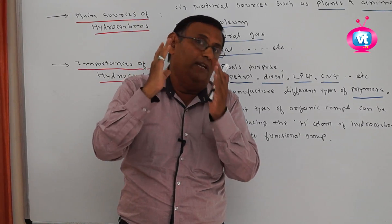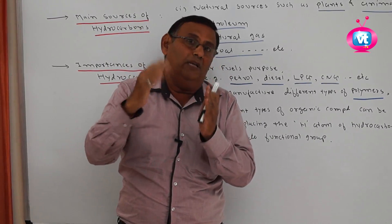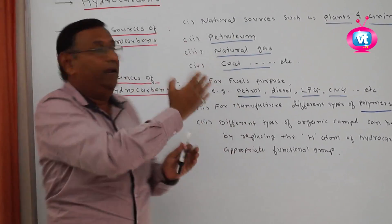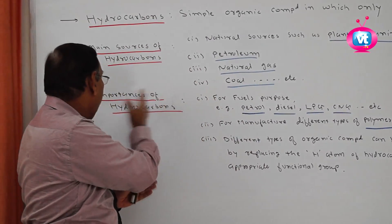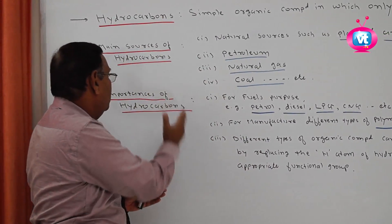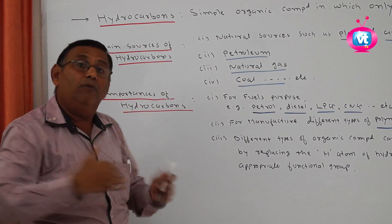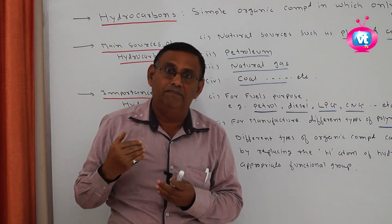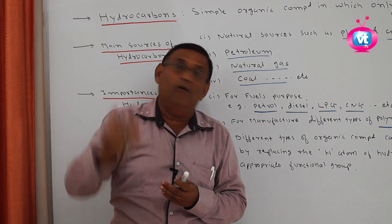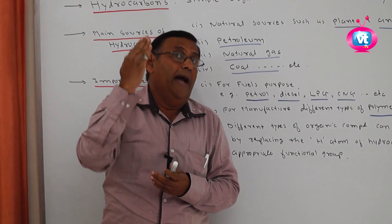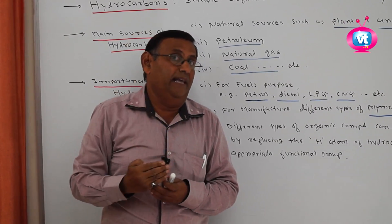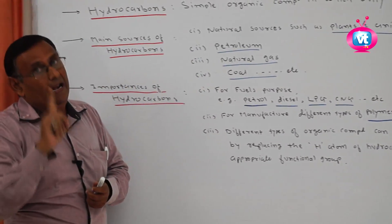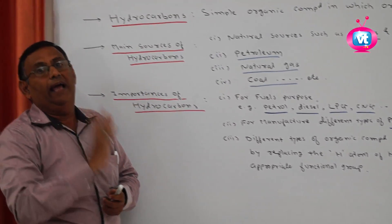So this variety of organic compounds is obtained by replacing one or more hydrogens from hydrocarbons by other elements or functional groups. You know that the functional group is the important part of an organic compound — all properties of organic compounds depend on the functional group, as we studied in Semester 1. Now, there are four types of hydrocarbons: alkane, alkene, alkyne, and arene.